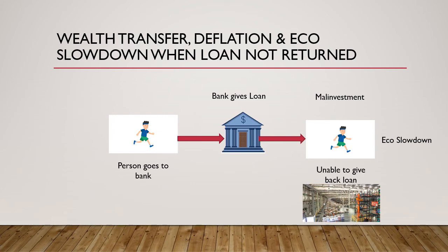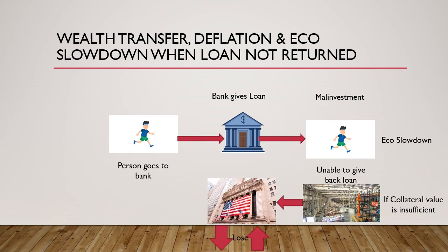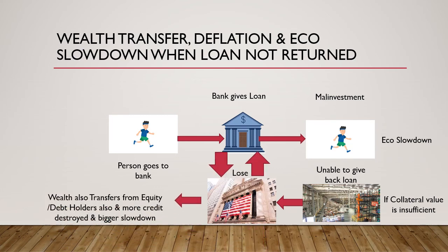In the second scenario, even the collateral value is insufficient for the banks to recover the loans. Investors will start losing money because the bank has to issue more equity, or in some cases debt, to raise the money to cover its losses on the balance sheet. This means more credit destruction takes place and this can lead to a bigger economic slowdown.